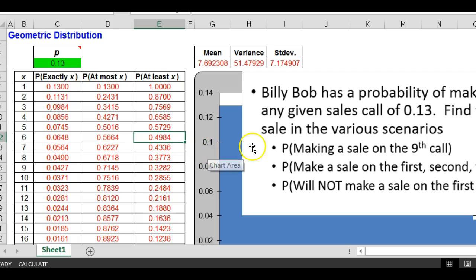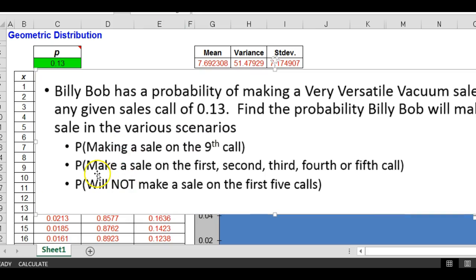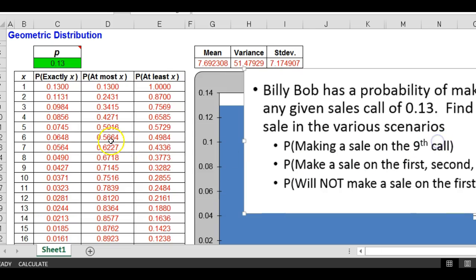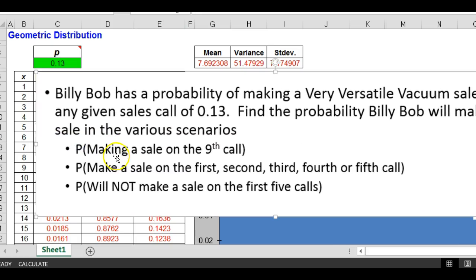Or, I could look at it this way. The probability he will make a sale on one of the first five calls, remember, was .5016. I could have said one minus that, I would have also gotten the same answer. But I want you to learn to logically look at these.